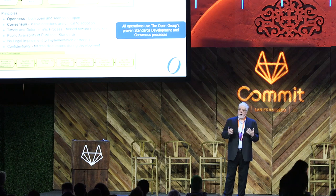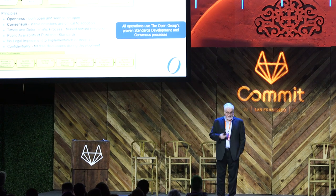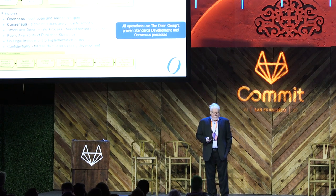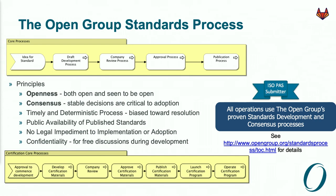So we want to have the broad consensus of the participants. It's got to be timely and deterministic — that value cycle time. And because we put so much emphasis on openness and consensus and good process, the Open Group is what is called an ISO publicly available specification. We can take these standards developed through consensus of our members and bring them right to the international standards community.